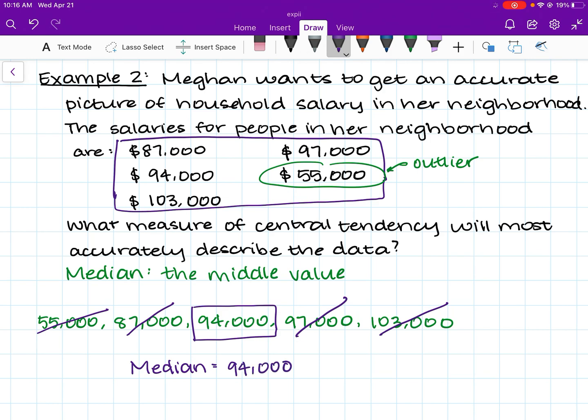That means if Megan wants to get this accurate picture here of the household salary in her neighborhood, we can say that the median household salary is 94,000.